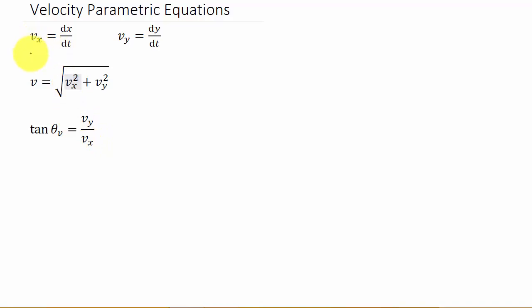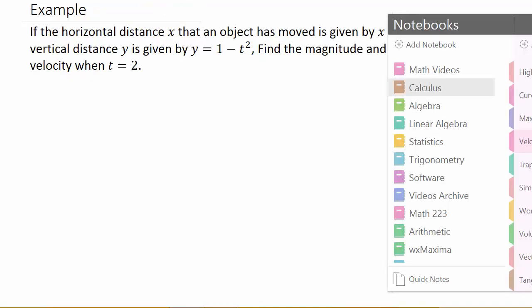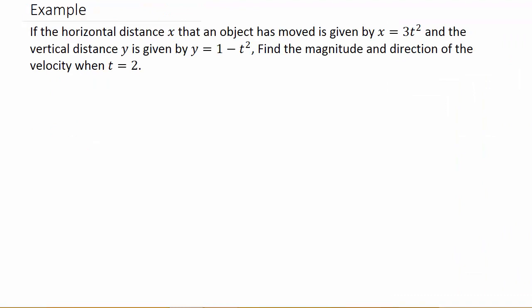Now v sub x is the derivative of x with respect to t and v sub y is the derivative of y with respect to t. So let's take a look at our example and it says if the horizontal distance x that an object has moved is given by these parametric equations x is equal to 3t squared and the vertical distance y is given by y equals 1 minus t squared. Find the magnitude and direction of the velocity when t is equal to 2.